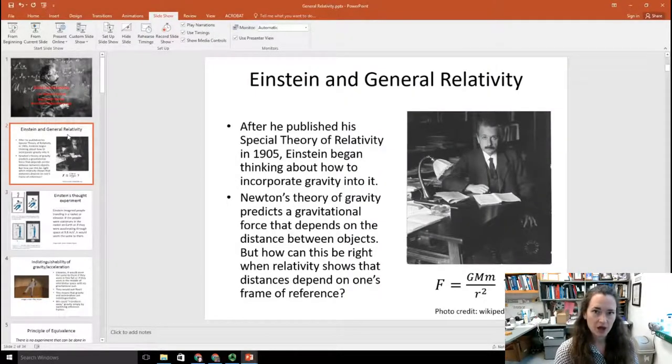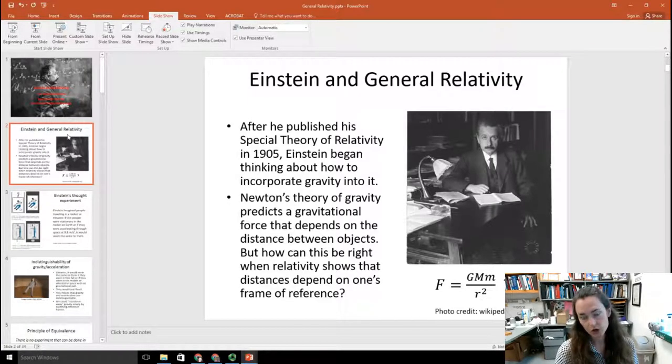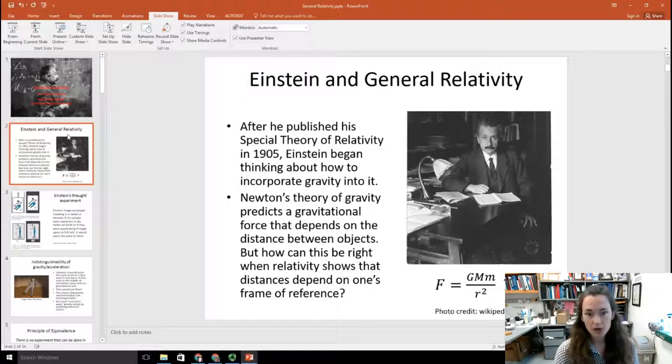If you remember, Newton came up with a law of universal gravitation, where the force, the gravitational force between two objects, is equal to G, the gravitational constant, times the product of the two masses, big M and little m, and then divided by the distance between those two objects squared. But Newton's theory of gravity includes the distance between objects.